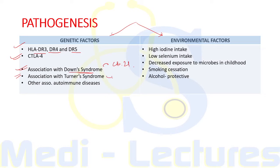Other associated autoimmune diseases include type 1 diabetes, Addison's disease, pernicious anemia, and vitiligo.